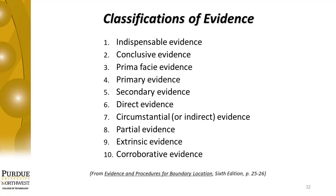Eighth is partial evidence, which establishes some detached fact — at times it is erroneously referred to as corroborative evidence. Ninth is extrinsic evidence, which we've talked about in other courses — derived from sources outside the writings. Tenth, corroborative evidence is supplementary to evidence already given and tends to strengthen or confirm evidence already given. It is additional evidence of a different character. Corroborative evidence, if used, may also act in a negative aspect. Those are the ten classifications of evidence.